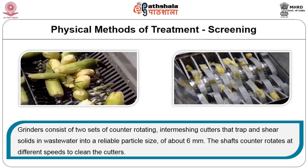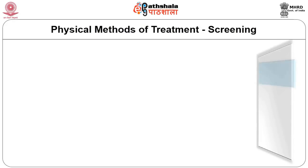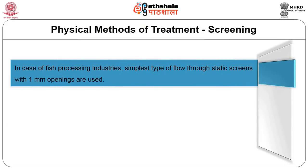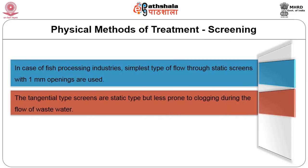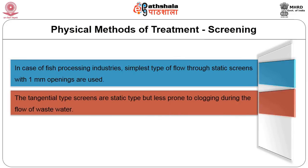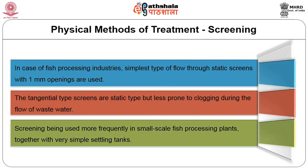The shafts counter-rotate at different speeds to clean the cutters. In fish processing industries, the simplest type of flow-through static screens with 1 mm openings are used. Tangential type screens are static but less prone to clogging due to the flow of wastewater. Screening is used more frequently in small-scale fish processing plants together with very simple settling tanks. The next method is sedimentation.